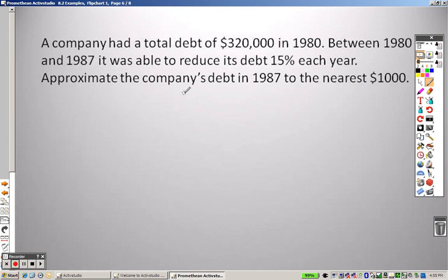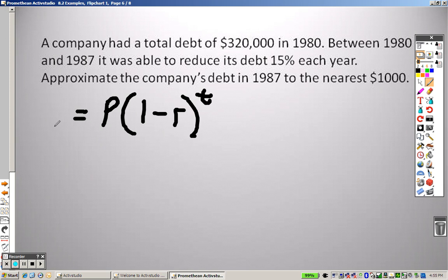A company had a total debt of $320,000, and then it was able to reduce its debt 15% each year. So once again, we're going to use the formula, and since we're talking about decreasing the debt, and remember, it would be N there, but N stands for 1 because we're doing this annually.